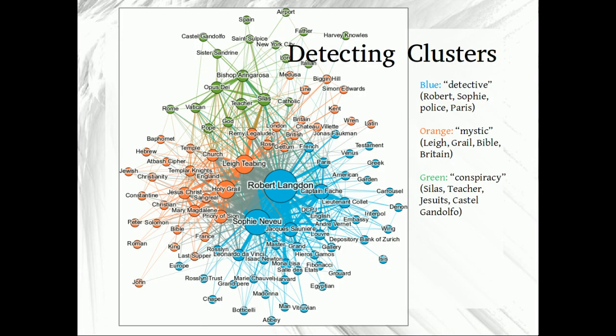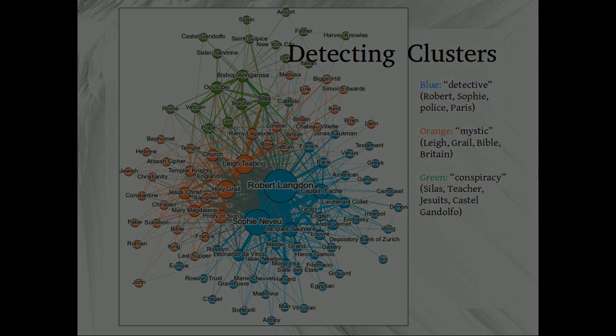Enter community detection, a network analysis technique for identifying dense node clusters. The book apparently has three clusters painted in different colors. I could use the most frequently referenced entity as each cluster's name, but I will be more intelligent and try to generalize. The blue cluster is detective, the orange cluster tells the mystic side of the story, and the green cluster is all about the conspiracy.